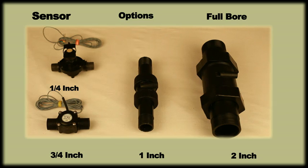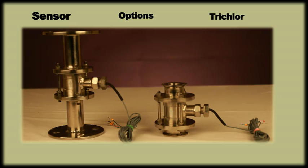They normally come with plastic BSP male threading. The 1 inch flow sensor is also available with SS trichlor end as well as flanged end connection.